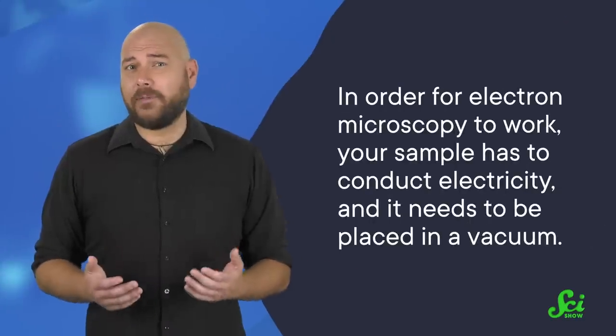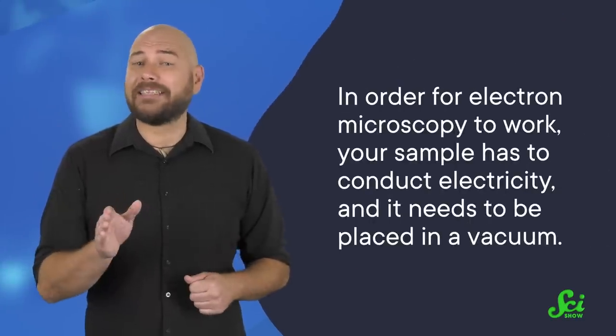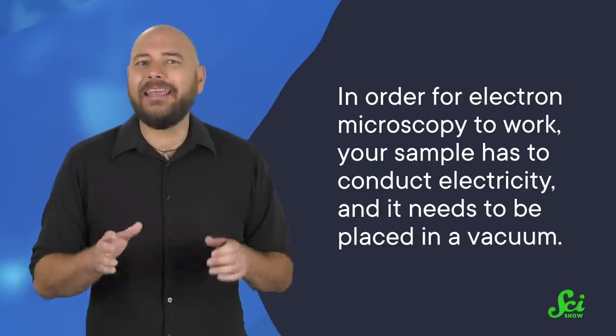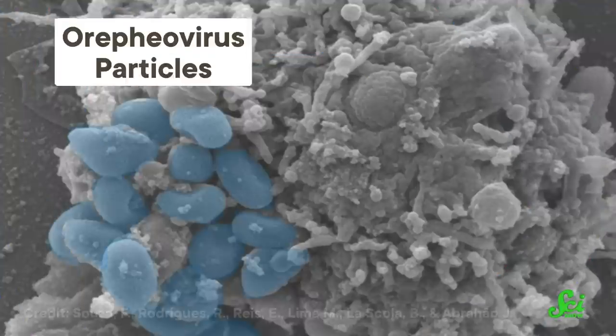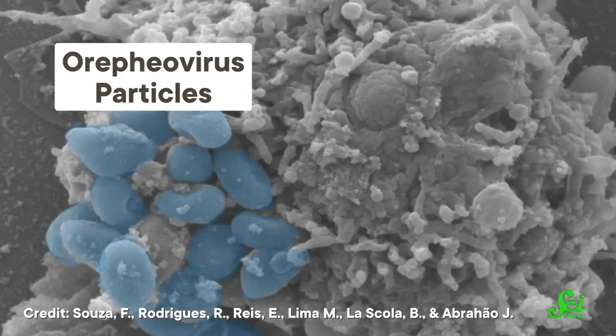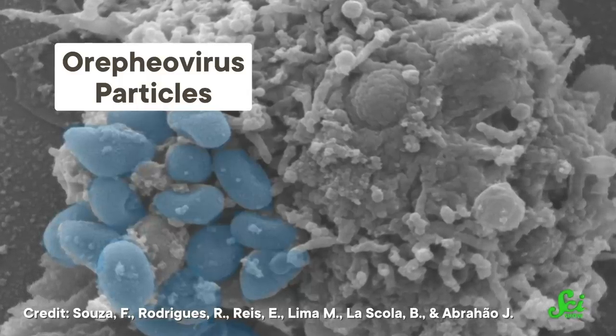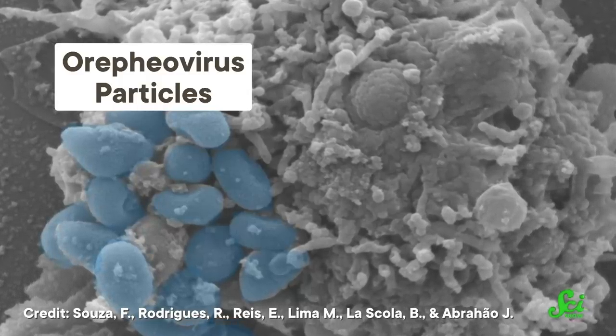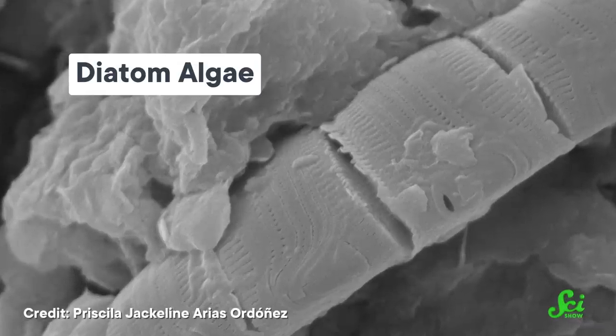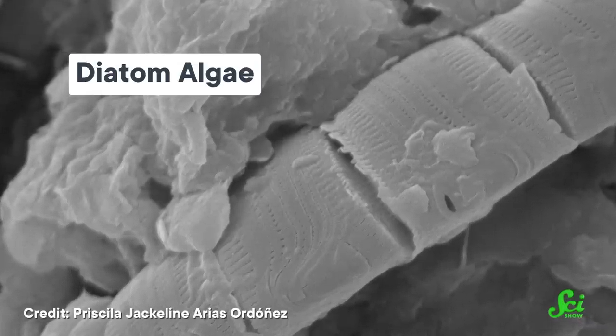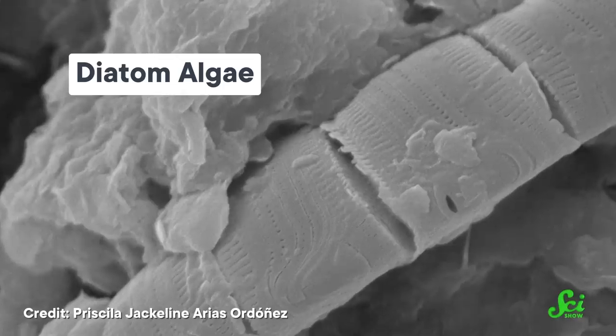Because in order for electron microscopy to work, your sample has to conduct electricity, and it needs to be placed in a vacuum. That means a specimen must be dehydrated, frozen, sliced up, and covered with something conductive, like gold. Not only is it dead, all that prep work and the electricity you're pumping through these teeny tiny corpses can damage them. And putting your sample through a proverbial meat grinder probably isn't the best way to figure out how fundamental biology works in the real world.